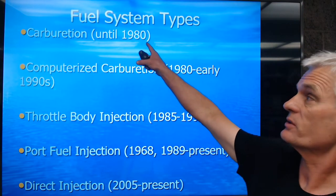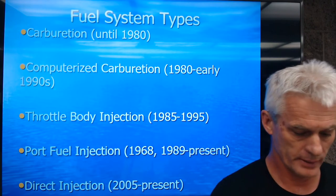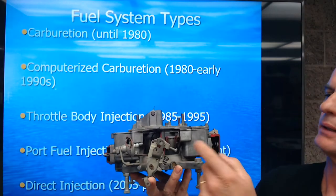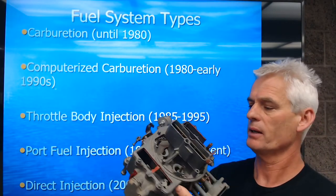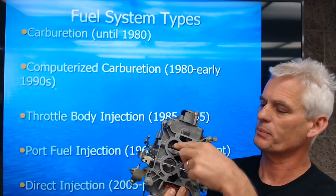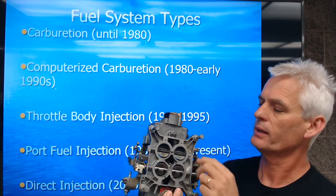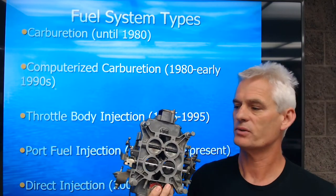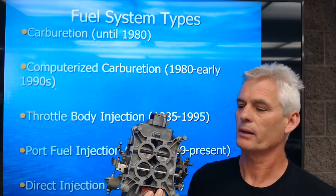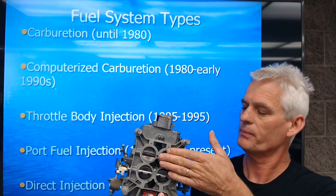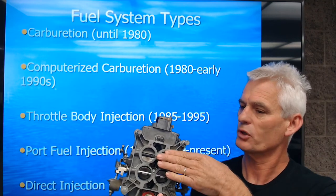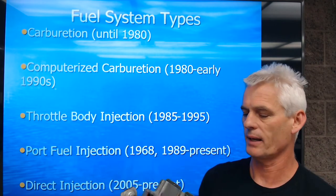Our first fuel system was carburation, used until about 1980. Here's a four-barrel carburetor that's been cut away — you can see the red lines marking the cutting spots. This carburetor has a pair of primary barrels and a pair of secondary barrels. There are two types: some are progressive, where the primaries open all the way and then the secondaries start, and others where the primaries open about halfway and then the secondaries start opening.